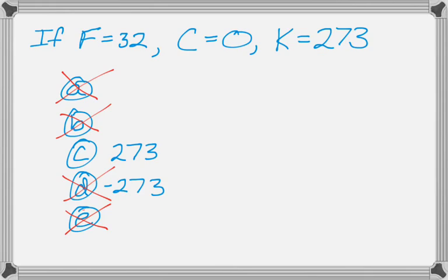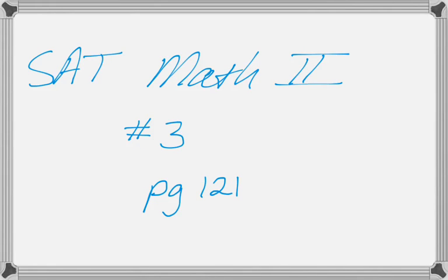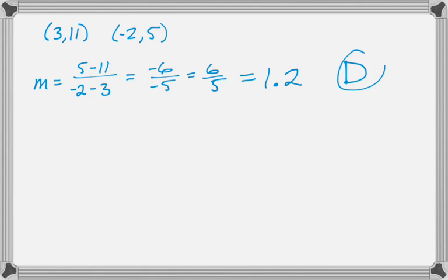Let's take a look at the next problem. This is number 3. We're given two ordered pairs, and we're just asked to find the slope between them. This question is hopefully easy if you're taking the math 2. It's going to be 5 minus 11 over negative 2 minus 3, which is negative 6 over negative 5, or 6 over 5, which is 1.2, or D.